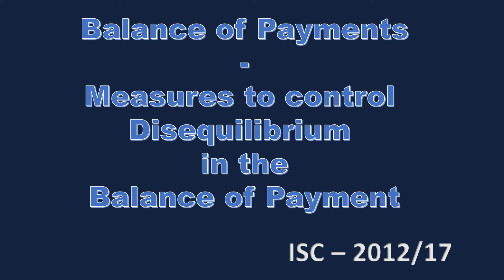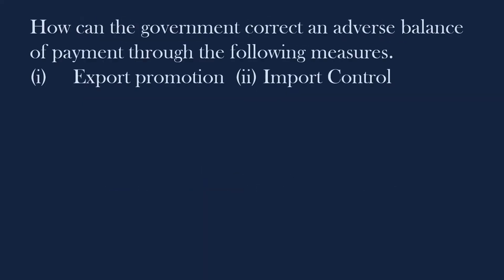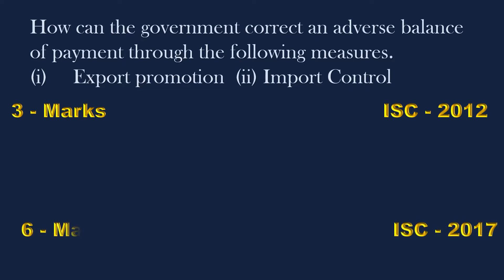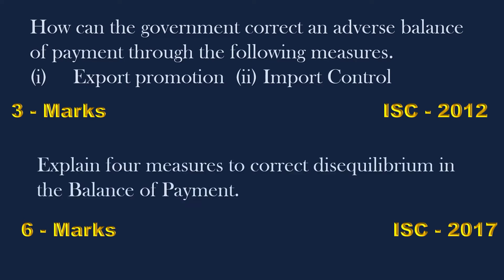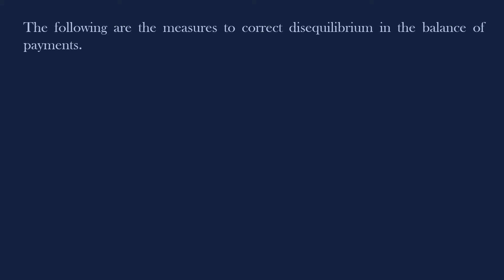Balance of Payments: measures to control equilibrium in the balance of payments. How can the government correct an adverse balance of payments? This is a 3-mark question from the 2012 ISE Board Examination, and a similar question appeared in 2017 carrying 6 marks: explain 4 measures to correct disequilibrium in the balance of payments. Since the answer to the first question is partly covered in the second, I shall give the answer to the second question. The following are the measures to correct disequilibrium in the balance of payments.